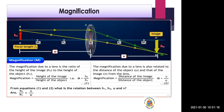The first formula for magnification is: m equals H2 upon H1, that is the height of the image divided by the height of the object. H2 is the height of the image and H1 is the height of the object. This is equation 1 for the magnification formula.